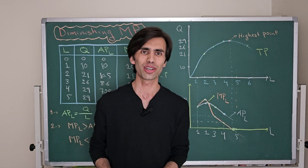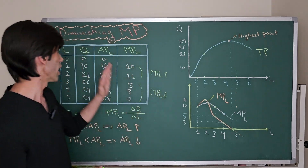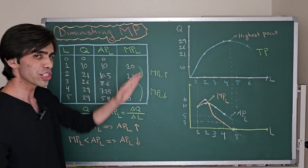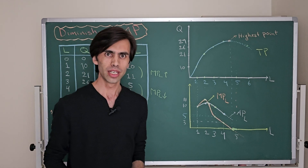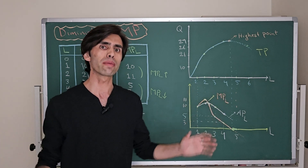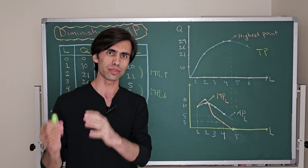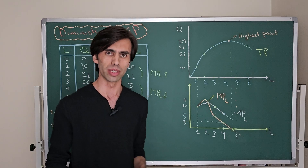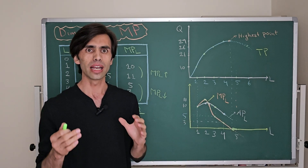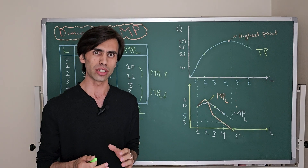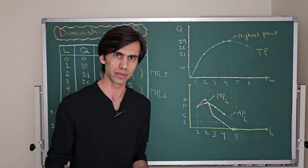Hello guys, welcome to another video on labor economics. In this video, let's talk about diminishing marginal product of labor. Suppose that you have a pizza shop and you are producing very delicious pizza for your customers and you want to hire labor in order to do your services for your customers.